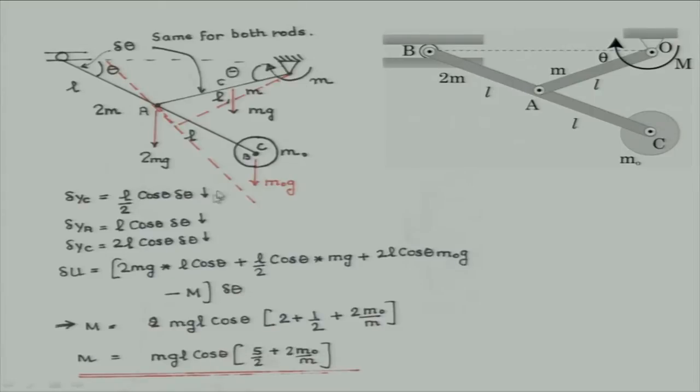Ultimately, what is the work done by the moment? If you apply a rotation of delta theta in this way, the work done will be minus M into delta theta, because the rotation is anti-clockwise on this rod but the moment is clockwise. So add up all the virtual works and you will get a simple equation for M.